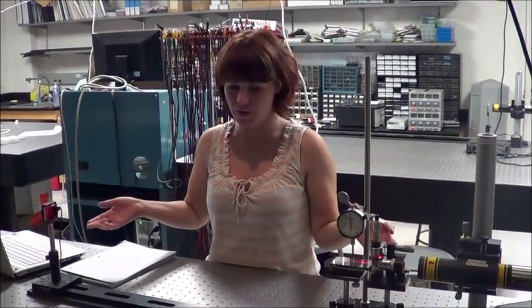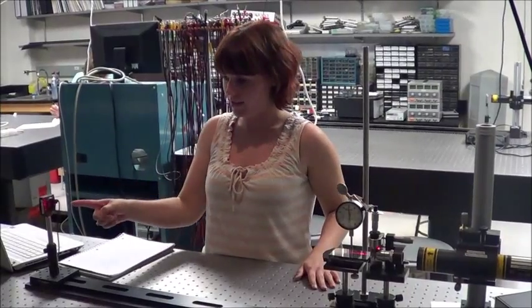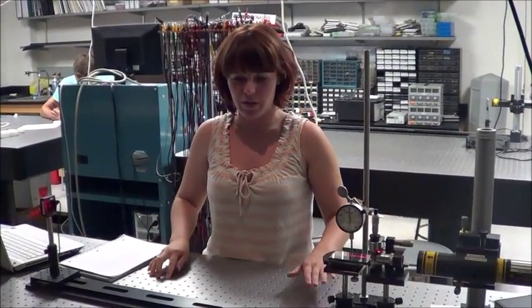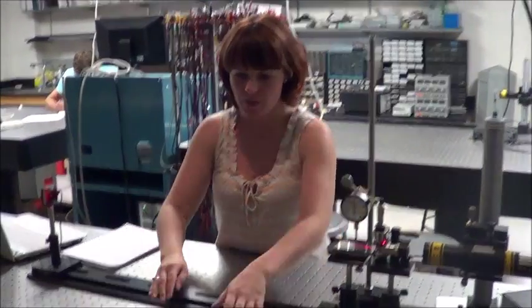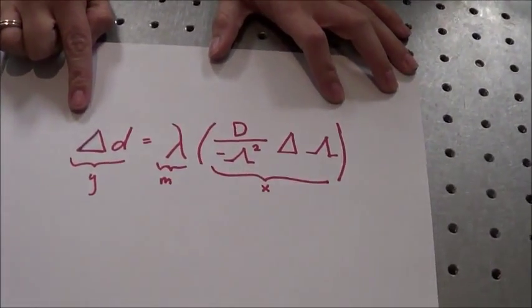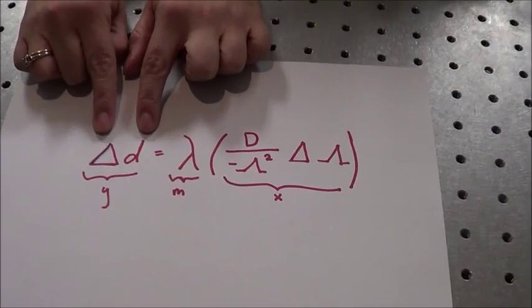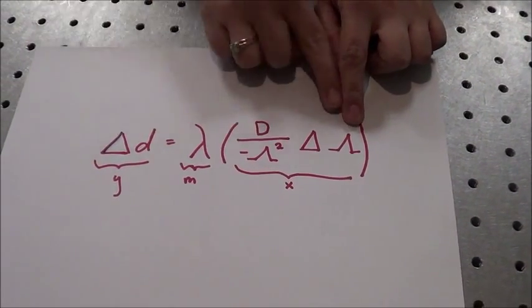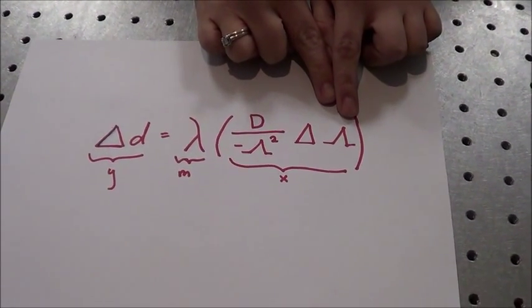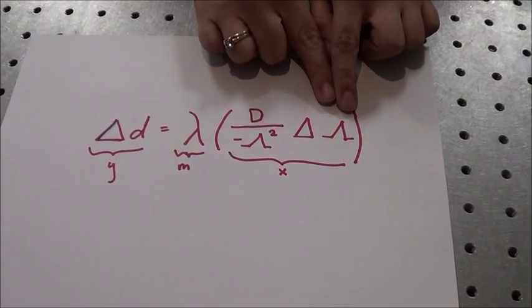This is Lloyd's mirror interferometer with a CCD camera. We're going to use experimental data from this setup to model this equation. We'll change our delta D by moving the mirror up and down and measure our fringe spacing in pixels with a MATLAB program, then convert it to microns.